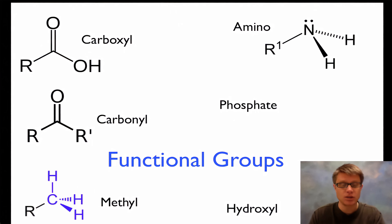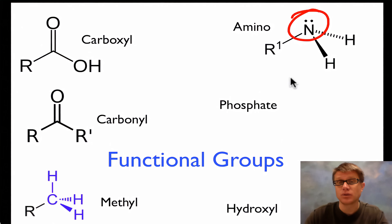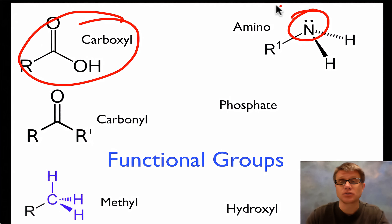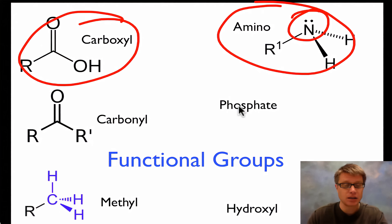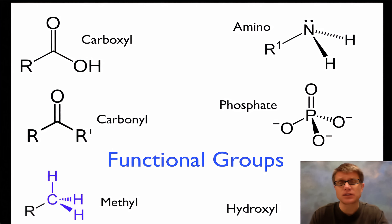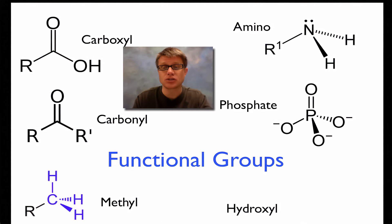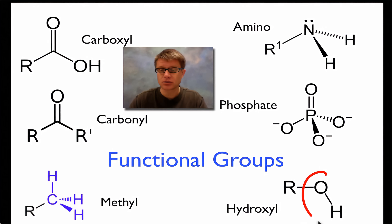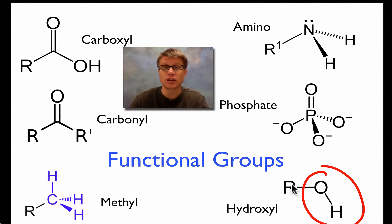The amino group has an NH2, so it's got nitrogen. We need nitrogen to survive, and the reason is to make amino acids. An amino acid, which is the building block of proteins, is made up of a carboxyl group and an amino group. Next would be the phosphate group — it's what's on the end of ATP and is used for energy transfer, and it's also used to build DNA. Finally we have the hydroxyl group, which is an OH — it makes the molecule polar and readily dissolvable.